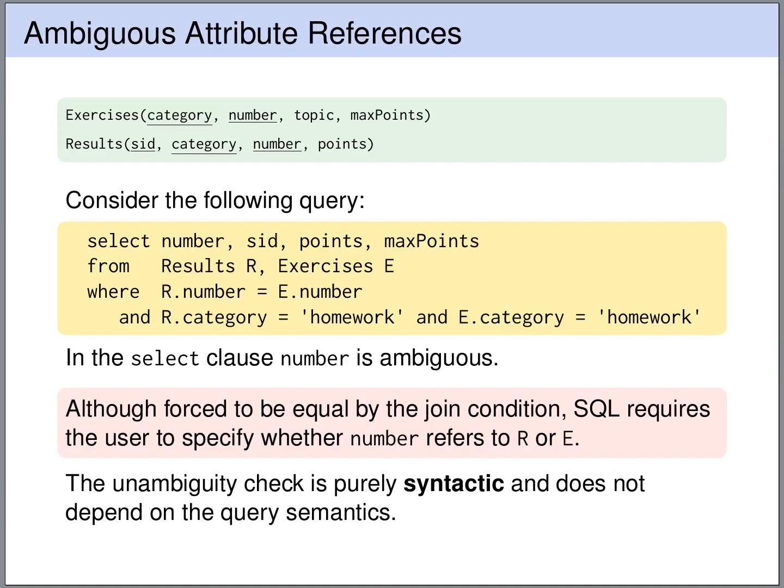Let's have a look at one more example query. Here we query the table's results and exercises, and we have a number of attributes that are referred to without explicitly stating whether they refer to the tuple variable R or E. Now for number this is problematic, because number appears both in the exercises table as well as in the results table. If we look a bit closer at the query, then actually we see that for a human there is no real ambiguity. Because in the WHERE clause, we say that we only consider those rows R of results and E of exercises, where R.number is equal to E.number.